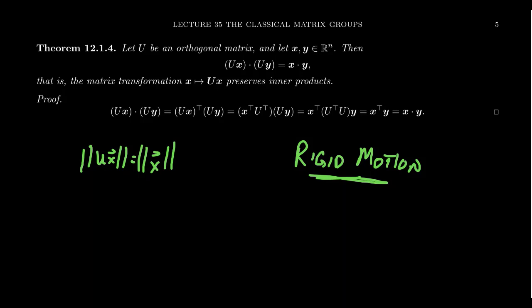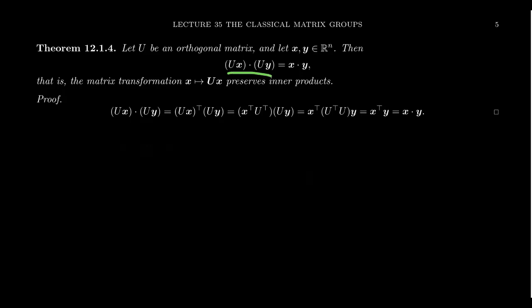Orthogonal matrices are not the only isometries of the plane, but they are the only isometries that are linear transformations in a vector space sense. The proof is straightforward: Ux · Uy = (Ux)^T(Uy) = x^T U^T U y = x^T I y = x · y, using the shoe-sock principle and the fact that U^T U = I for orthogonal matrices. So orthogonal matrices are perfectly designed matrices that preserve inner products and everything derived from an inner product.